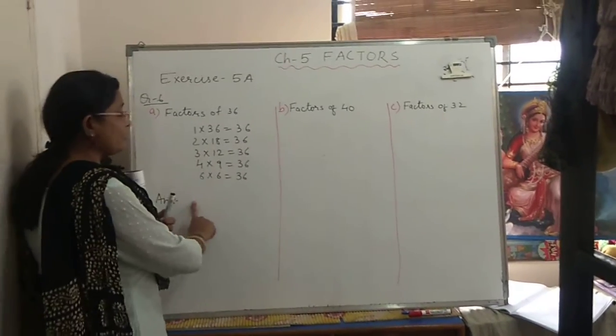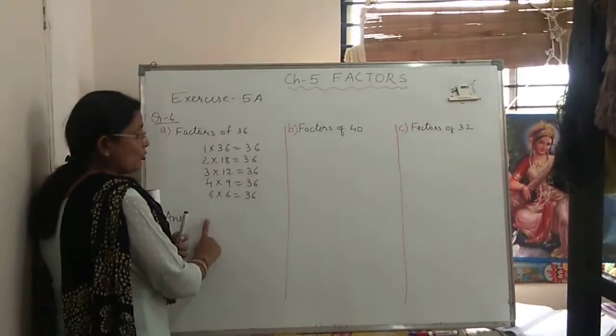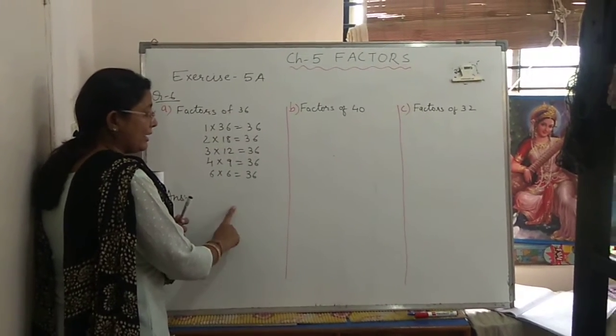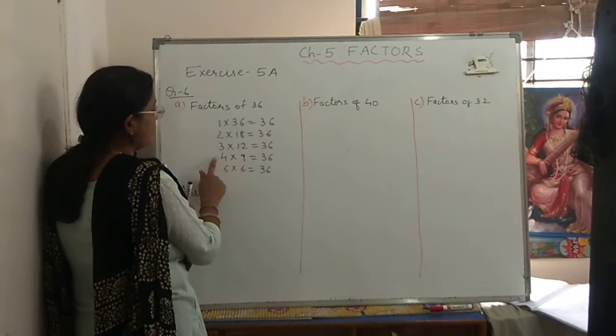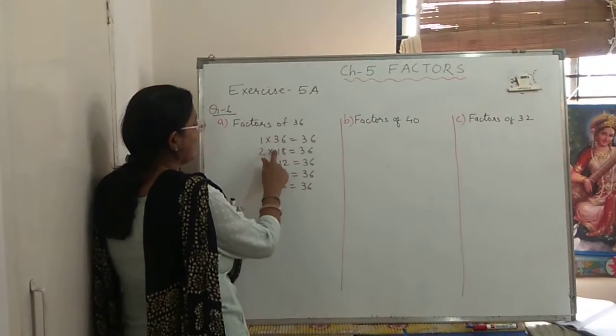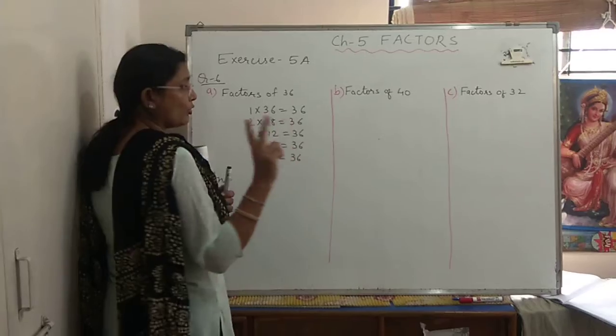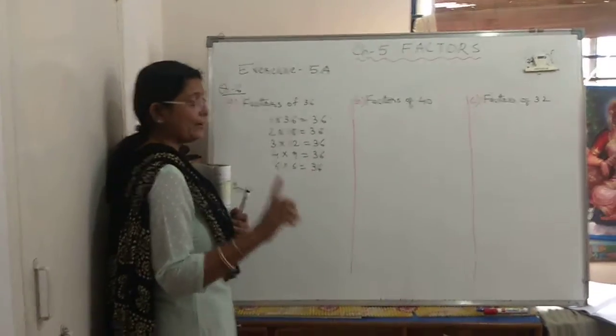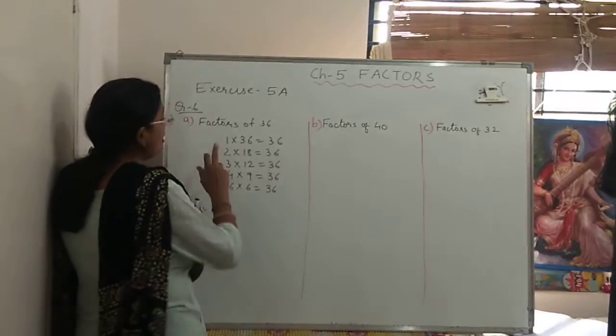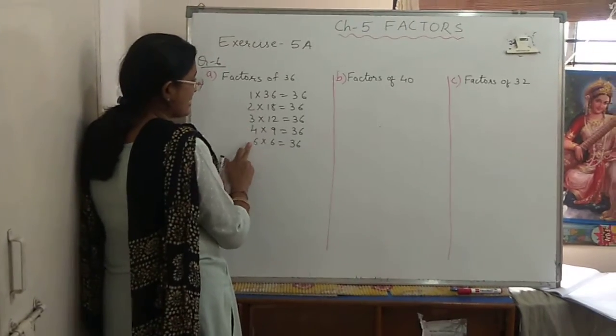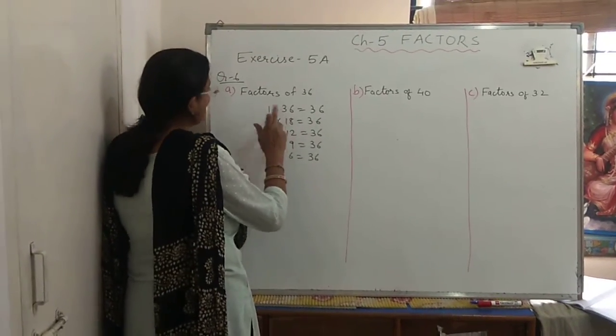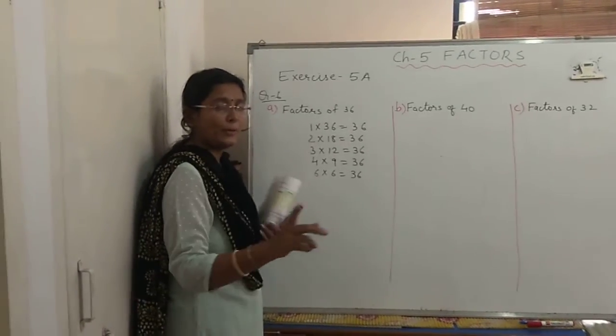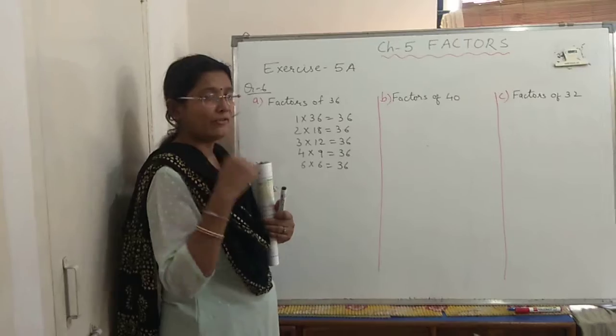So you have to write here the answer that the bookshop helper can make piles of 1, 2, 3, 4, 6, 9, 12, 18 and 36. No need to write 6 two times. I repeat once again, the bookshop helper can make piles of 1, 2, 3, 4, 6, 9, 12, 18 and 36. This is the way you have to write the answer in statement. You can copy down the answer from the weekend part which I have sent you.